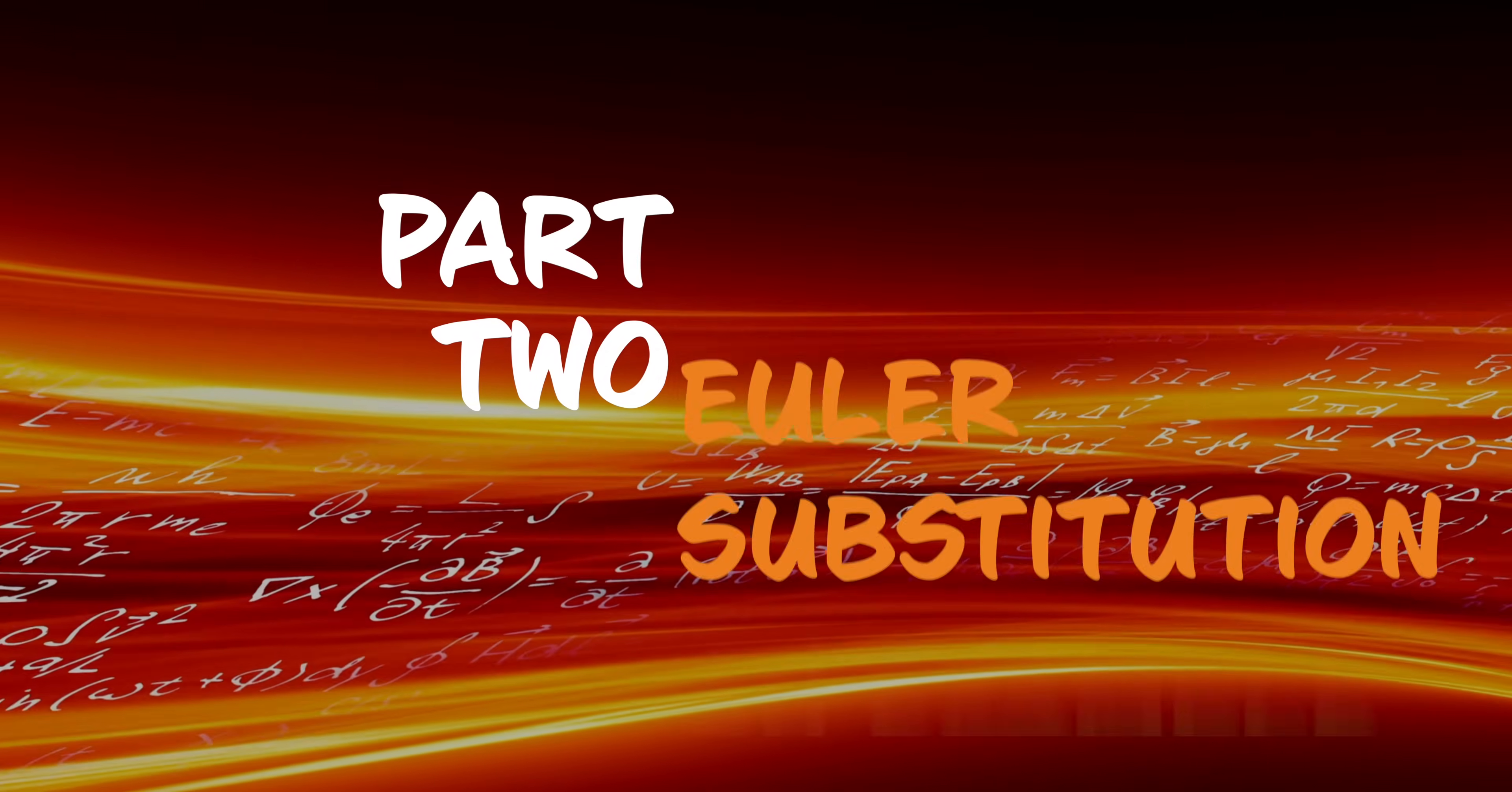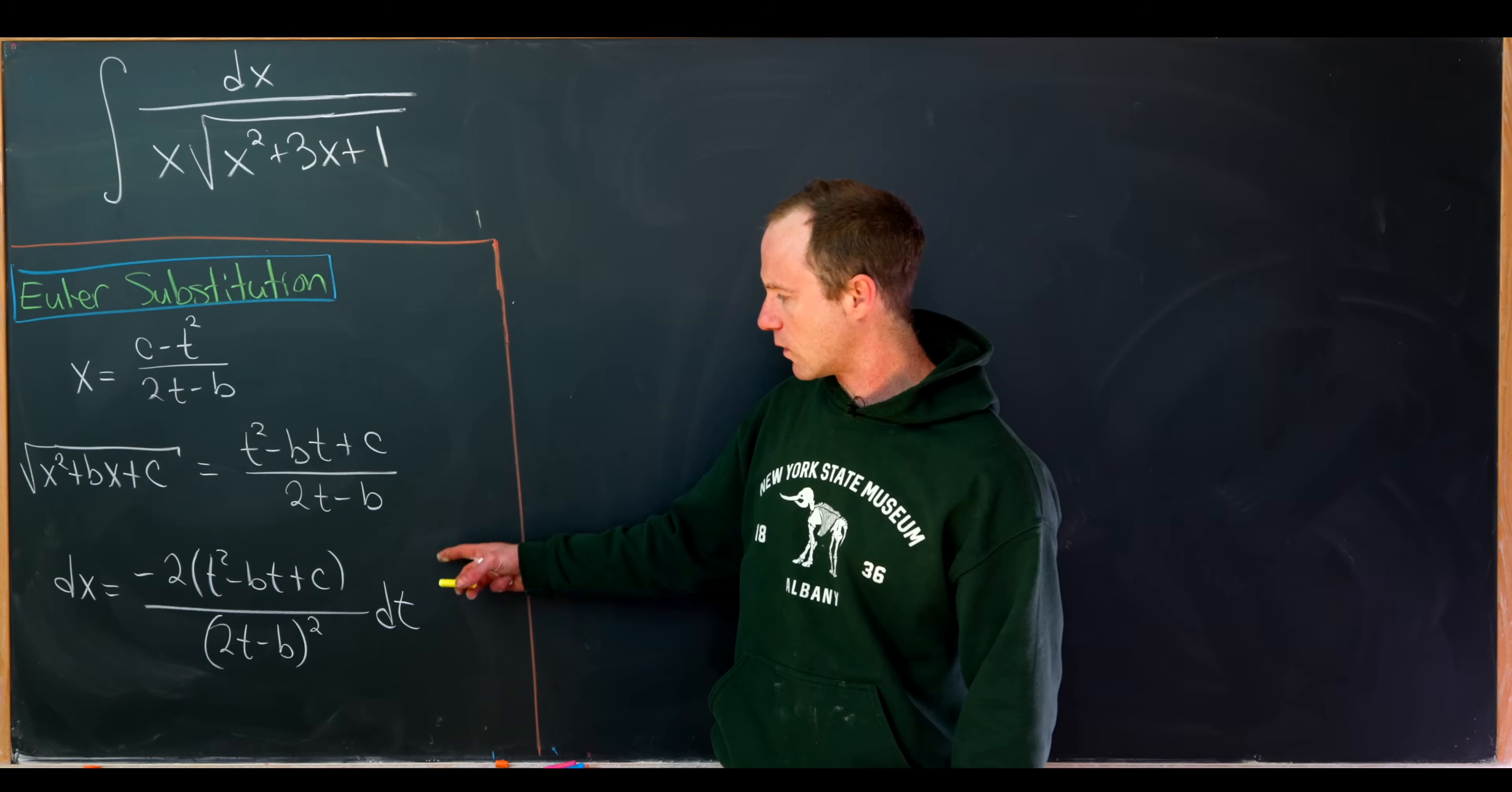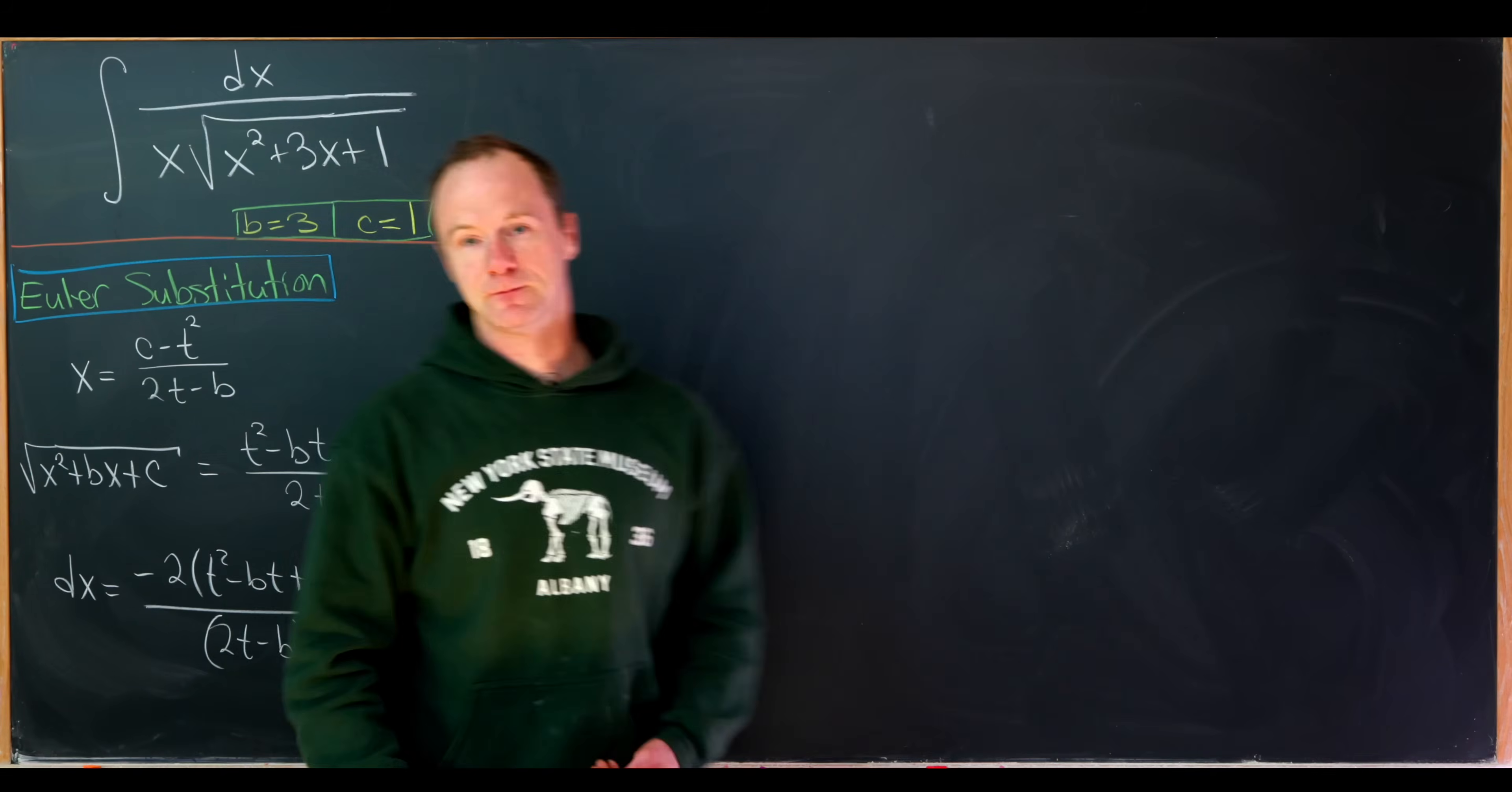Now we're going to look at an example. And just to remind ourselves, that substitution was called Euler substitution. So we're going to look at the integral of the function 1 over x times the square root of x squared plus 3x plus 1. And let's recall, these were the parts of our Euler substitution. So notice in this setup, we have b equal to 3, and we have c equal to 1.